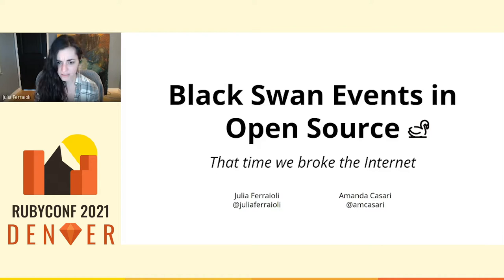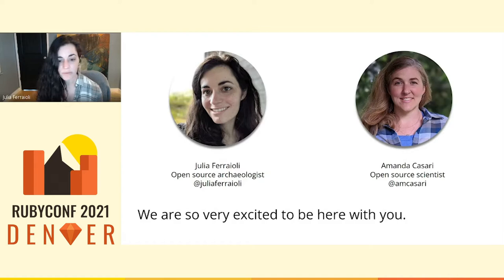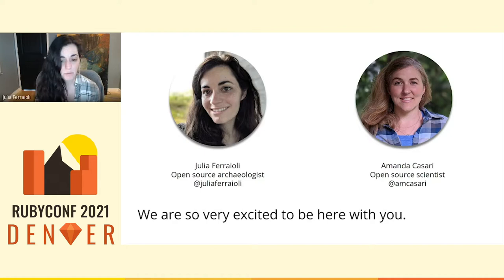We're going to delve into complex socio-technical systems and how they interact with open source. I'm Julia Ferrioli — a white woman with wavy brown hair wearing a gray and white flannel shirt. I've been working in or around open source for an unspecified number of years, focused on policy, sustainability, and everything else that needs to be done. I'm a bit of an open source archaeologist because I dig around in data, stories, and source code with a fine-toothed comb and enthusiasm.